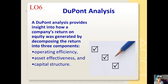A DuPont analysis provides insight into how a company's return on equity was generated by decomposing the return into three components: operating efficiency, asset effectiveness, and capital structure.